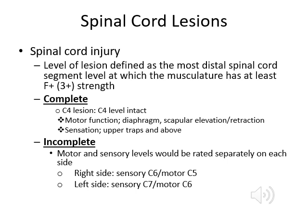Most spinal cord injuries are incomplete — not completely across one segment; they may go diagonally. So motor and sensory levels have to be rated separately, one side to the other. For example, you could have the right side with sensory at C6 and motor at C5, but the left side with sensory at C7 and motor at C6.